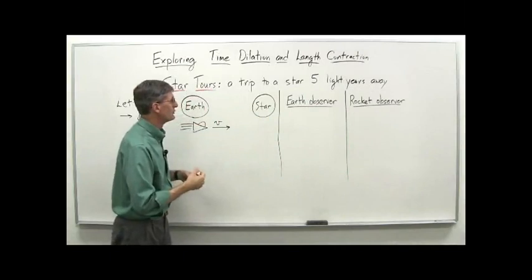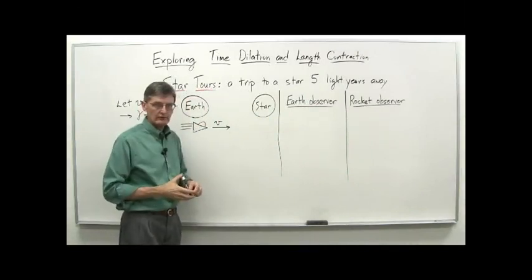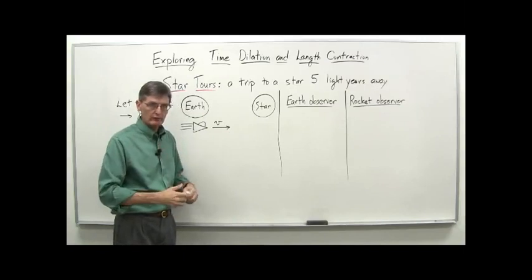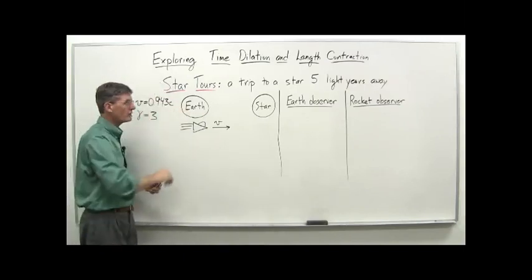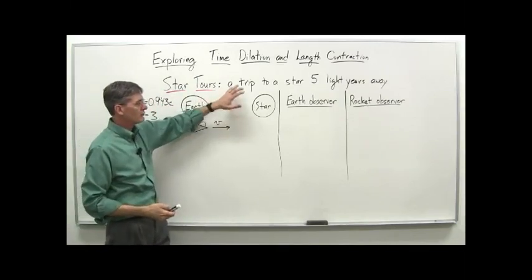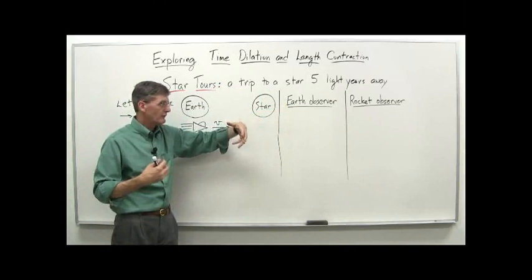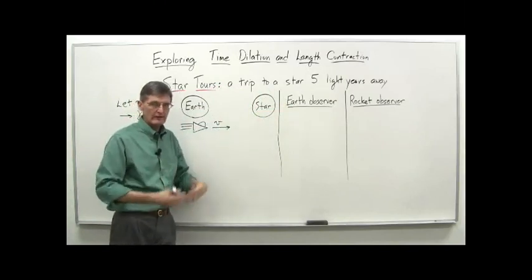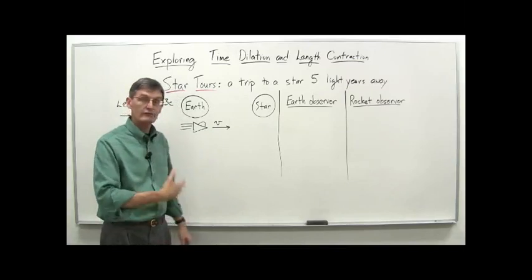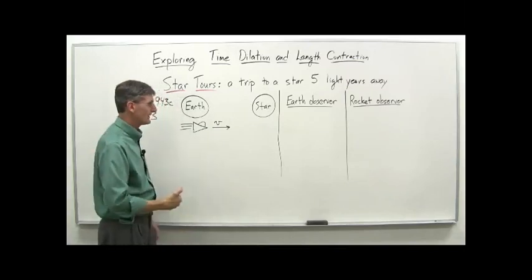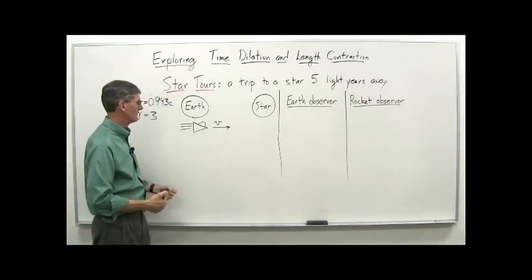In this video lecture, we want to spend a little time exploring time dilation and length contraction, which we introduced last week. We're going to do a little star tour here. Imagine a trip to a star five light years away. If we could go there at the speed of light, it would take five years to get there in a certain frame of reference, as we will see.